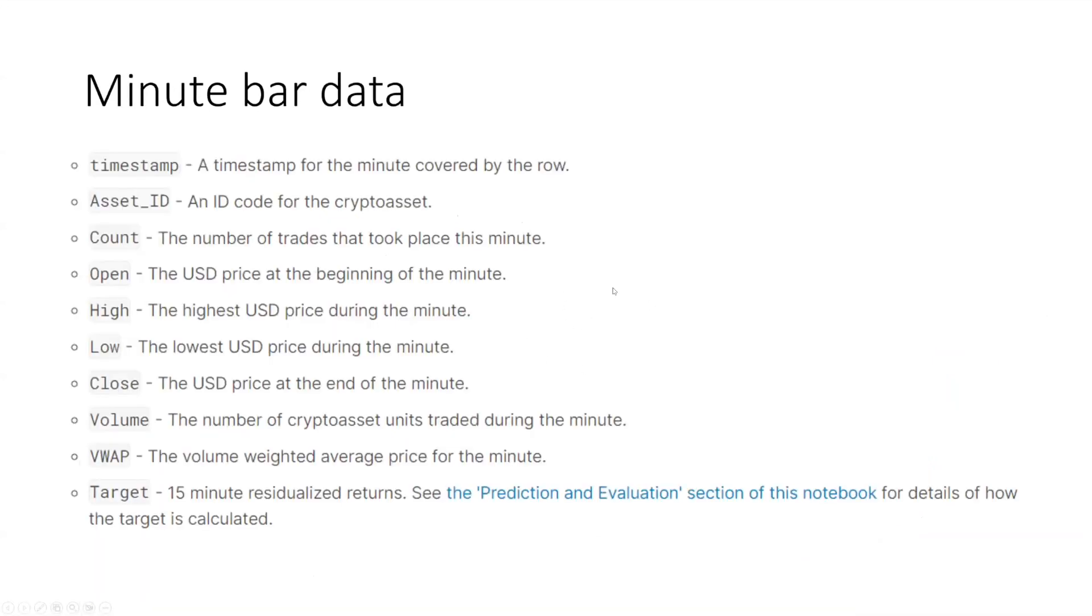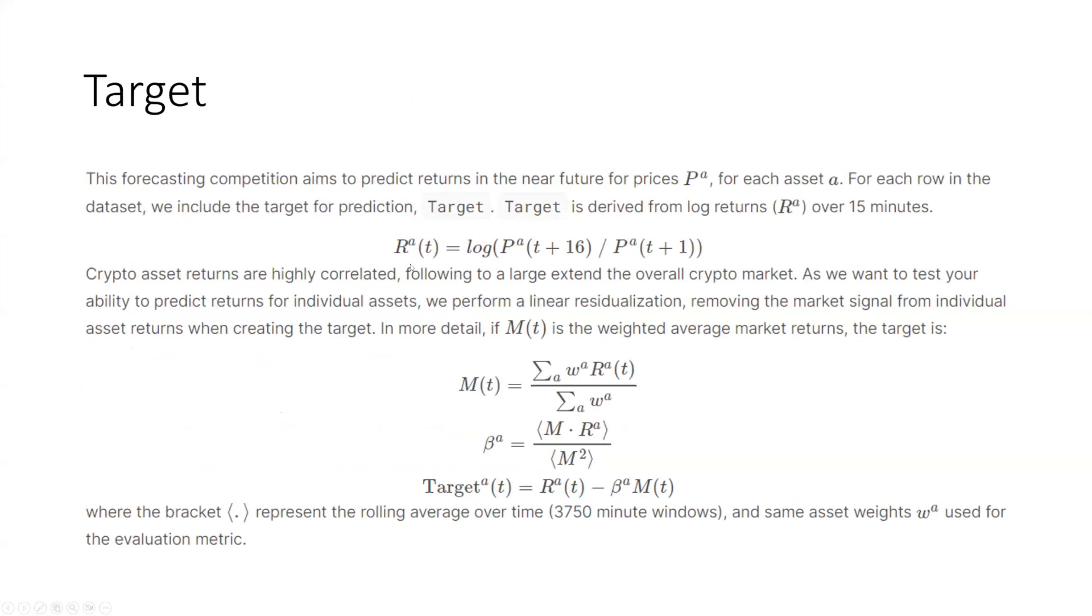These are the raw features of the minute bar data. We are given the timestamp, the asset ID, some common price data such as count, open, high, low, close, volume and the volume weighted average price. We are also given the targets in the training data which is a 15-minute residualized return. This is the column we need to predict in this competition. These are the details to construct the targets. Crypto assets and returns are highly correlated, following to a large extent the overall crypto market. The host is more interested in predicting the returns for individual assets, so they try to remove the market signal from individual assets.